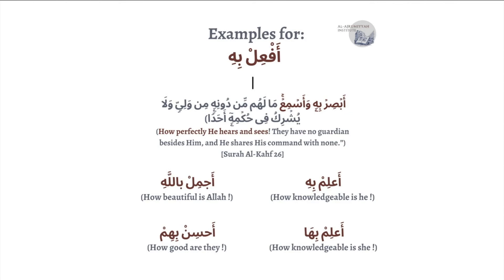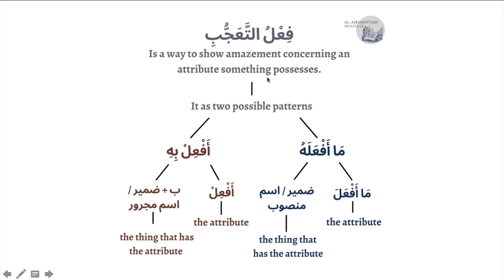The second pattern, which is more readily used, is مَا أَفْعَلَهُ. Here أَفْعَلَ represents the attribute, just like in the first pattern but with a different form. So you'd say for example مَا أَحْسَنَهُ meaning 'how good,' مَا أَطْوَلَهُ meaning 'how tall,' or مَا أَجْمَلَهُ meaning 'how beautiful.' The word that comes after أَفْعَلَ is either a pronoun attached to it or an اسم منصوب — the thing that has the attribute in an amazing way.